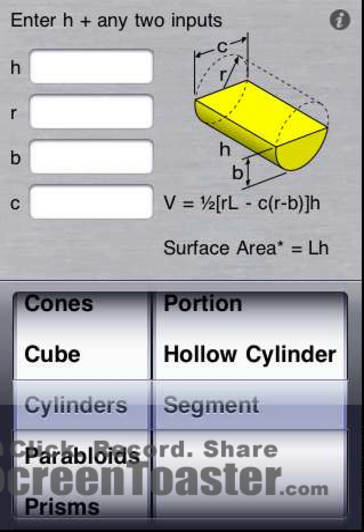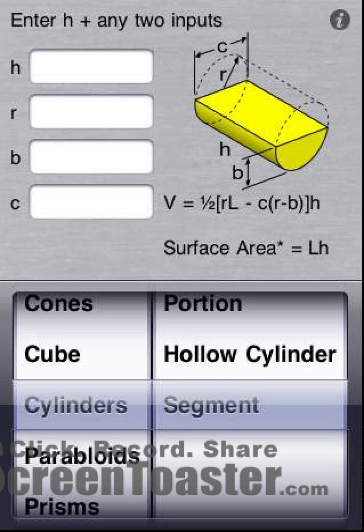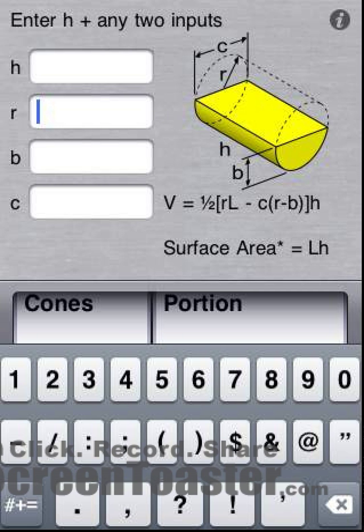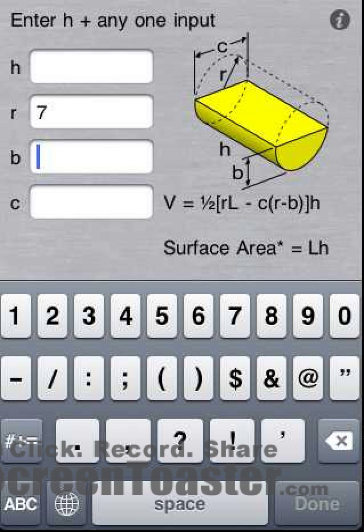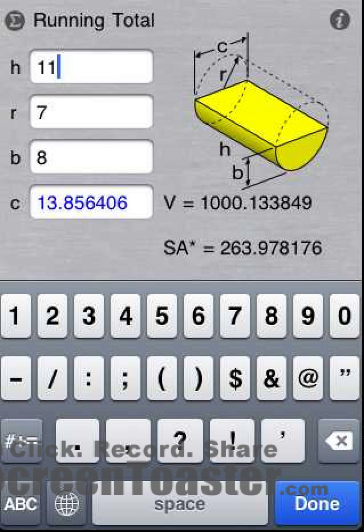This time we are instructed to enter H, plus any two inputs. We'll enter a radius of 7 first, as the order does not matter. We'll enter 8 for the fill height. We'll enter 11 for the cylinder height. Another feature seen here is the calculation of all the other parameters in addition to the volume and surface area.